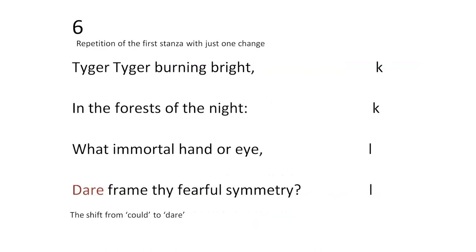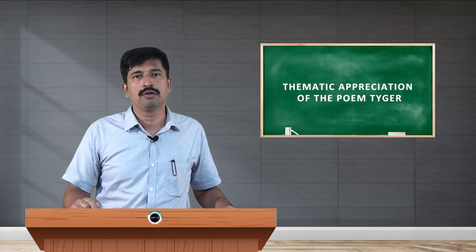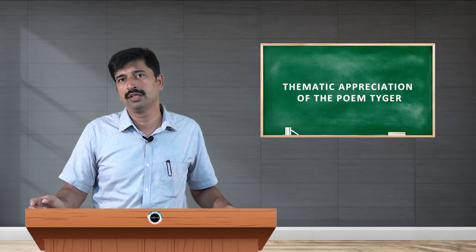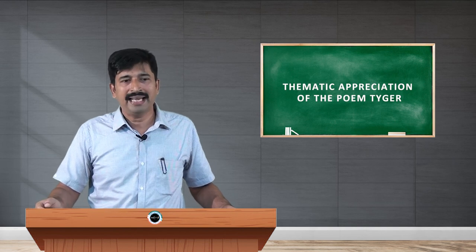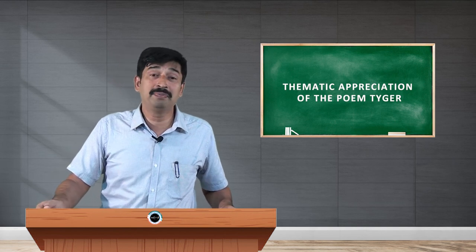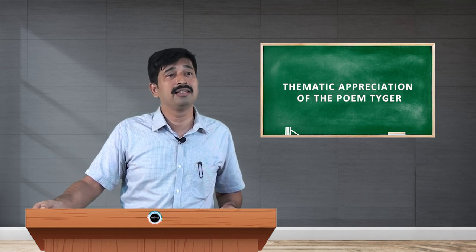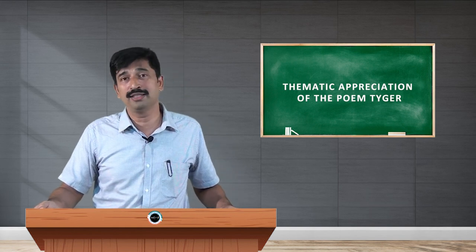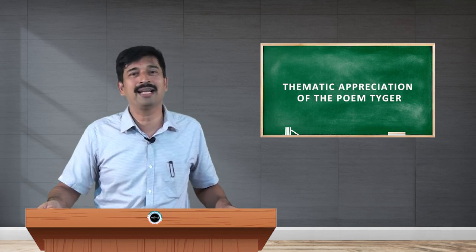The last stanza is quite repetitive compared to the first, except for one change in the final line's first word: 'could frame thy symmetry' is replaced with 'dare frame thy fearful symmetry,' shifting the notion of capability to daringness of the creator. I encourage you to go through the text for various metaphorical understandings of the poem Tiger, and we can discuss further aspects in class alongside your other readings. Thank you very much.